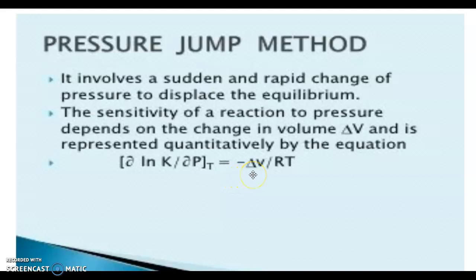∂ln K / ∂P at constant temperature equals negative ΔV / RT, where R is the gas constant and T is the temperature. This is the equation for pressure jump method. In the relaxation method we have two types: based on pressure and based on temperature change. By this we can study the kinetics of fast reactions.